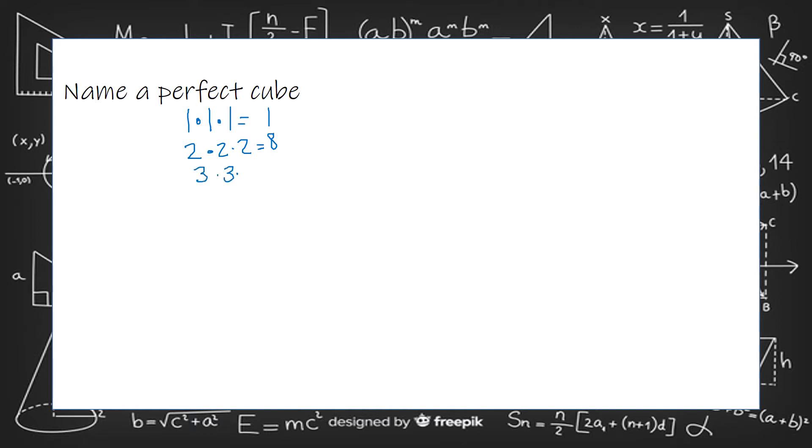Three times three times three. Three times three is nine times three is 27. You could keep going on and on and on forever. A hundred times a hundred times a hundred. A million times a million times a million. Those numbers that they equal are those perfect cubes.